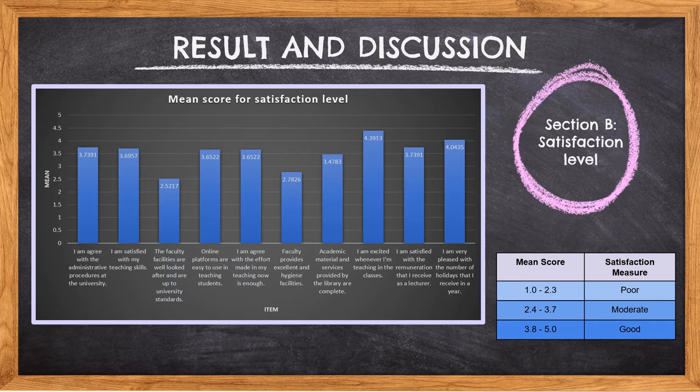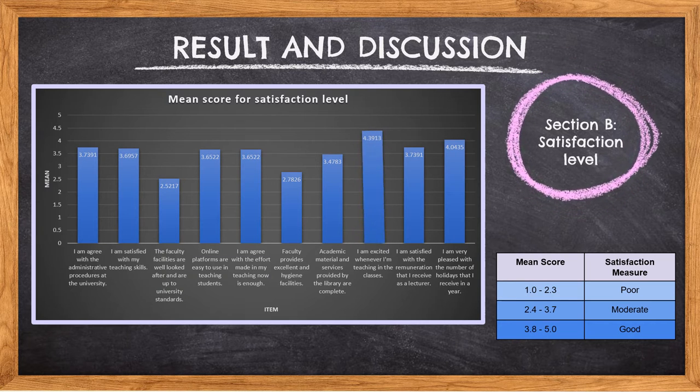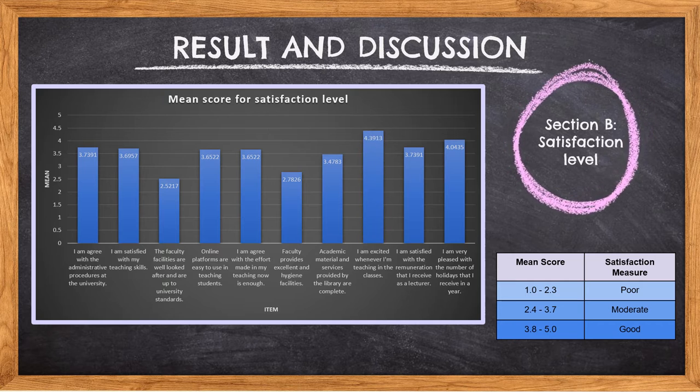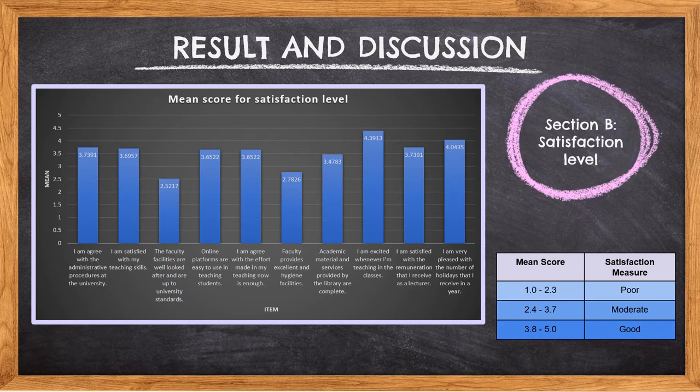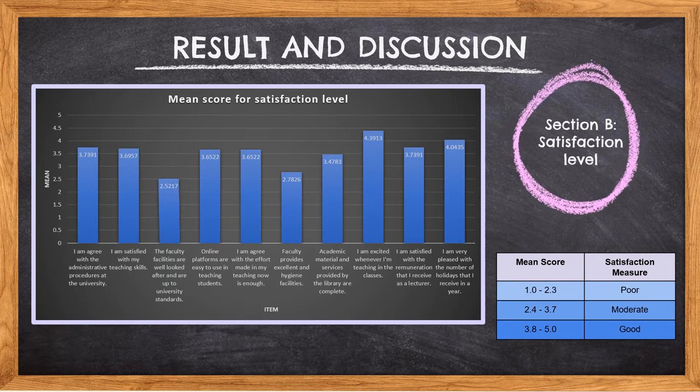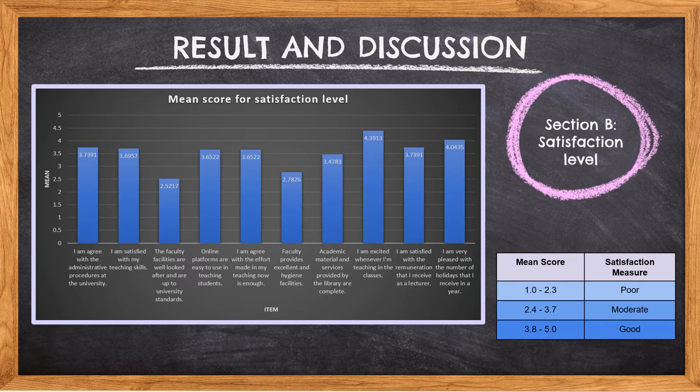Based on the graph, the highest mean score for satisfaction level is 4.3913 which is I am excited whenever I am teaching in the classes and is in a good score. The lowest mean score for satisfaction level is 2.5217 which is the faculty facilities are well looked after and are up to university standards and is in a moderate score.